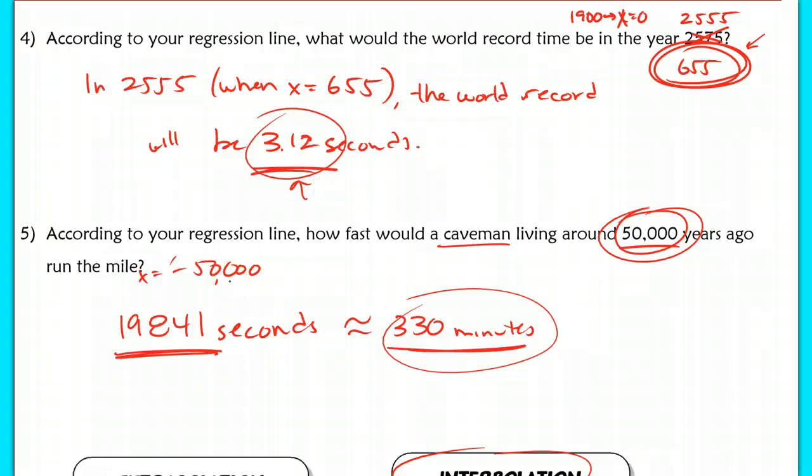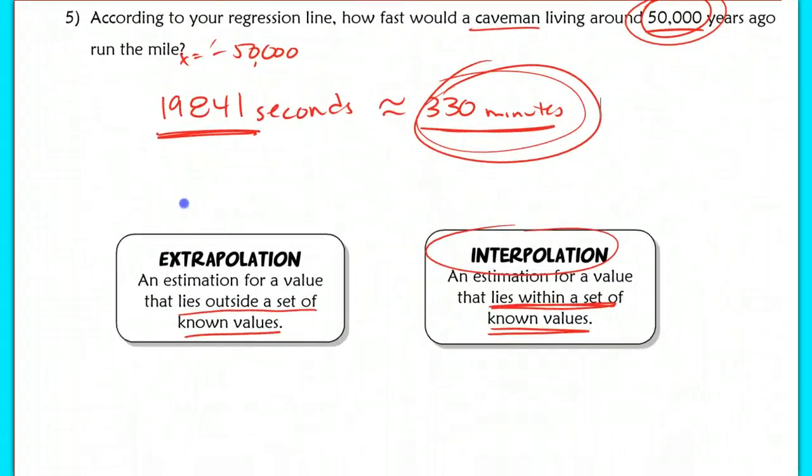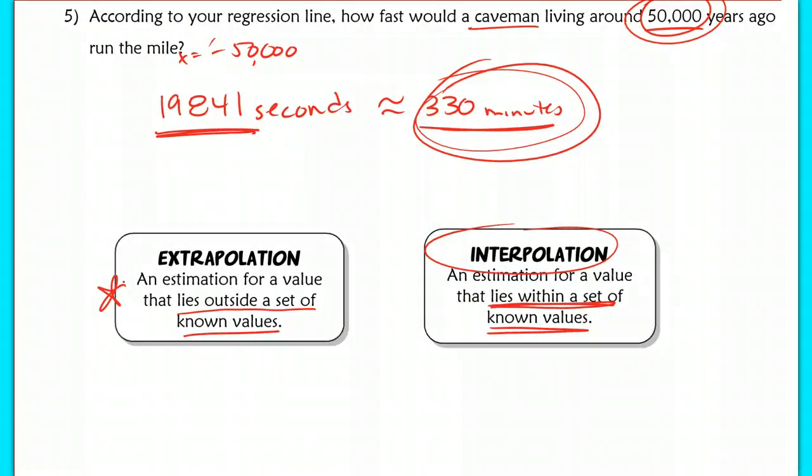When we extrapolated, meaning in questions four and five, we went way outside of our data set and we plugged in a number here, 655, and negative 50,000 here. We plugged in numbers that were so far out of that range. We're just giving a rough estimate here. But we got numbers that were absurd. This 3.12 seconds, clearly not possible. 330 minutes is also not very reasonable or realistic because a caveman would be really, really, really, really, really incredibly slow. So essentially, that's the idea here, the new idea that when you extrapolate data, when you go outside of your data set, then you get unreliable information. So extrapolation is unreliable. Interpolation, on the other hand, is reasonable, and it gives a pretty reasonable and accurate estimate.